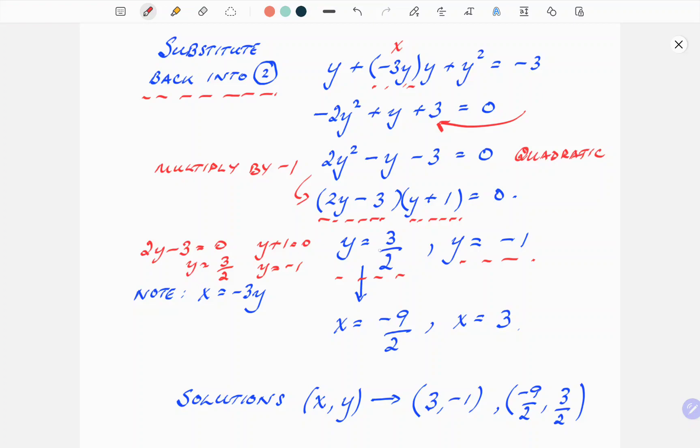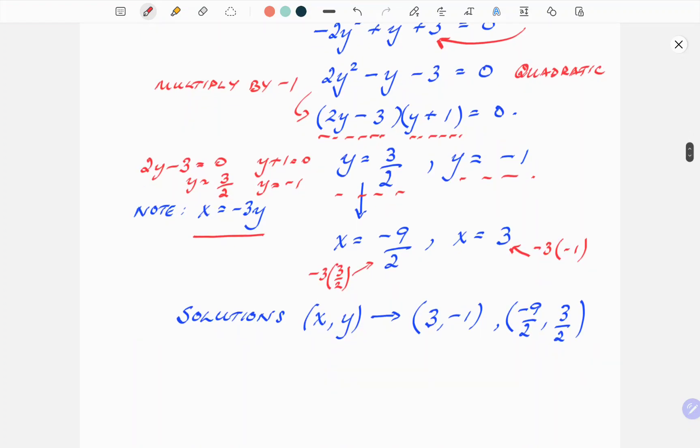Taking each one in turn, start with the y equals 3 over 2. Noting that right at the beginning, we had a relationship between x and y, x equals minus 3y. Therefore, x must equal minus 3 times 3 over 2, and that gives a result minus 9 over 2. Correspondingly, when y equals minus 1, x equals minus 3 times minus 1, and that gives that result there. So that has actually gotten us right to the solution.